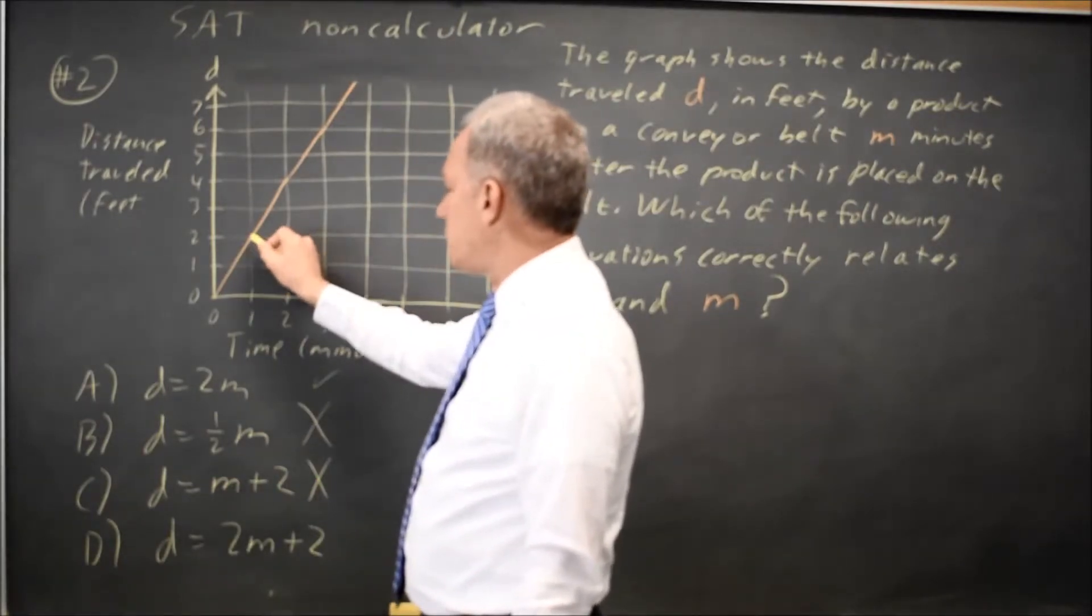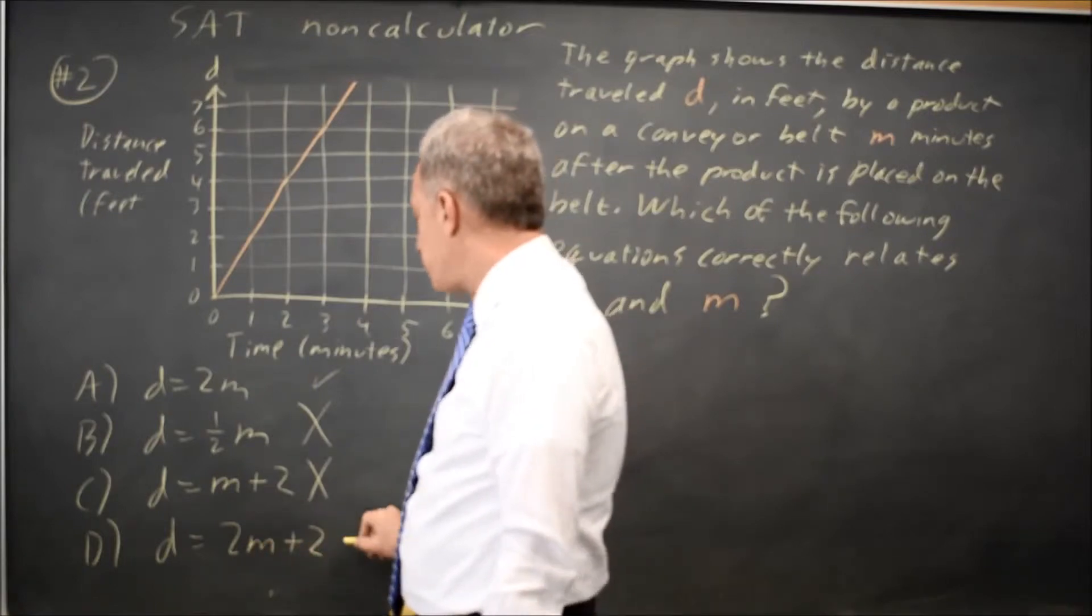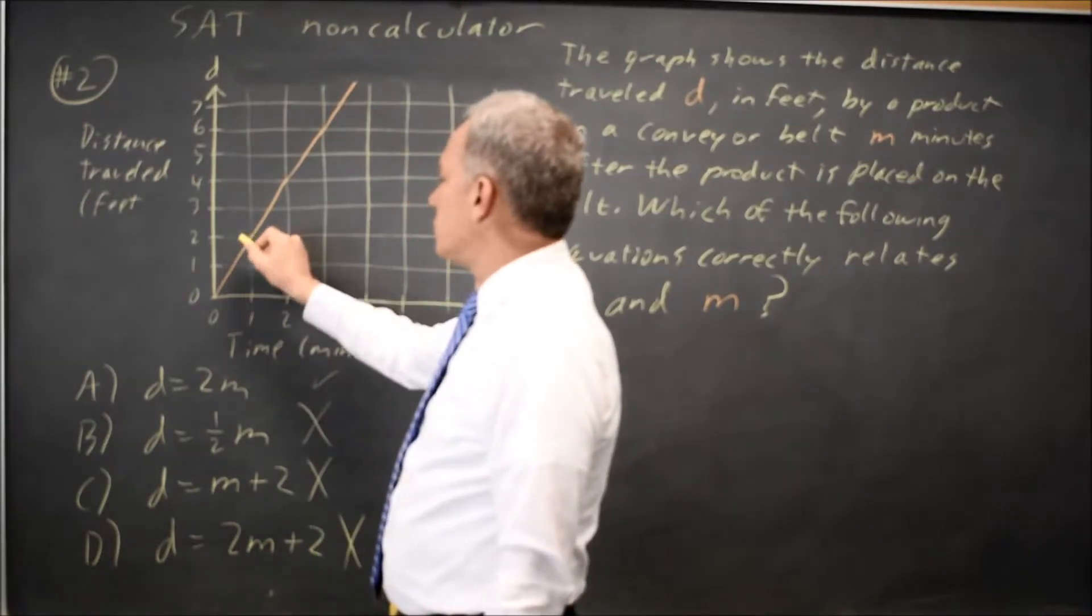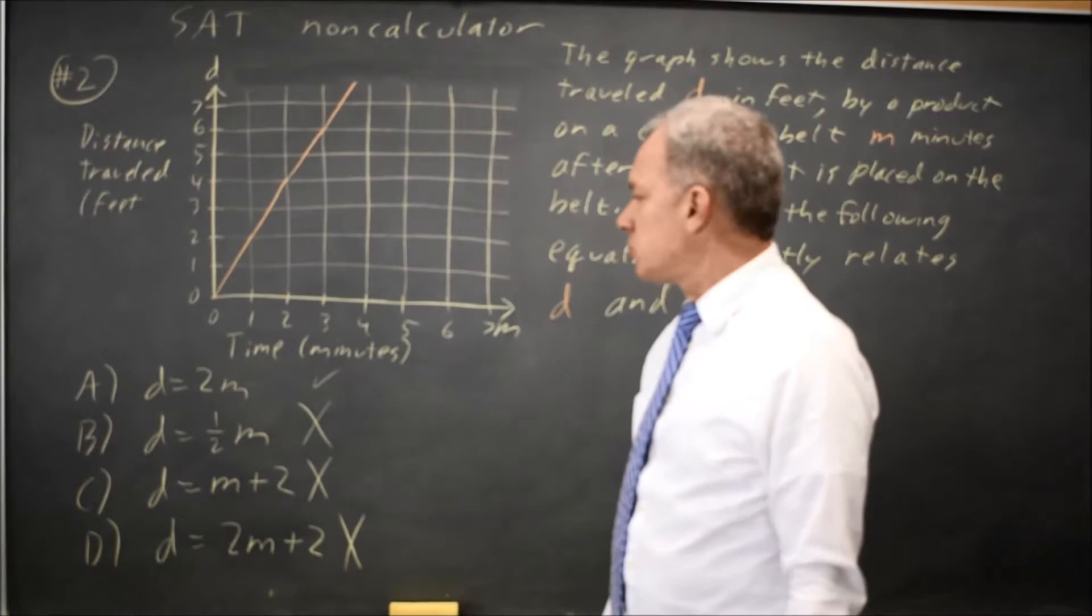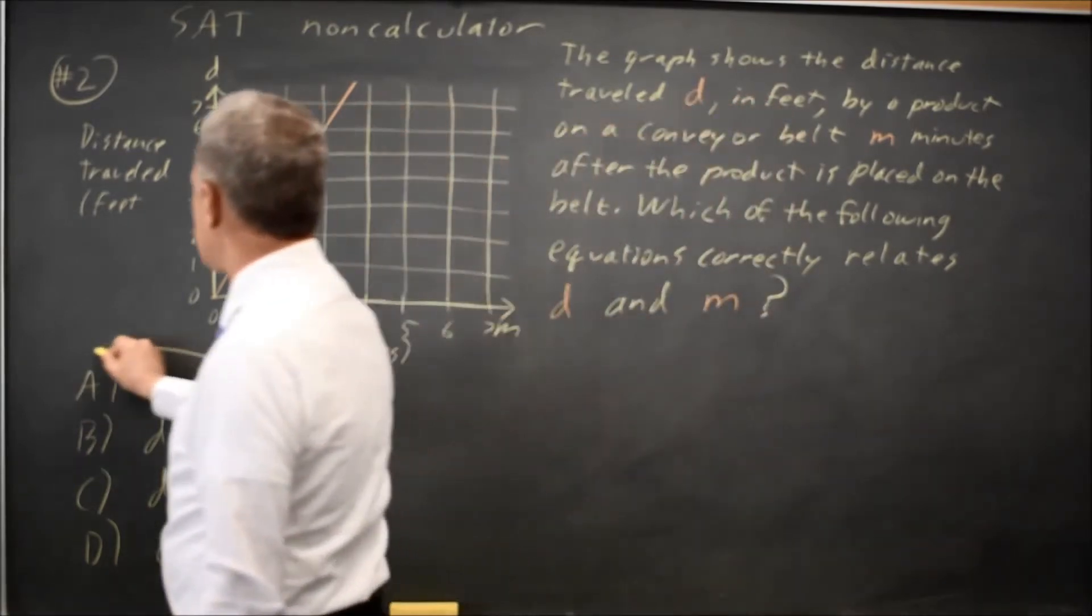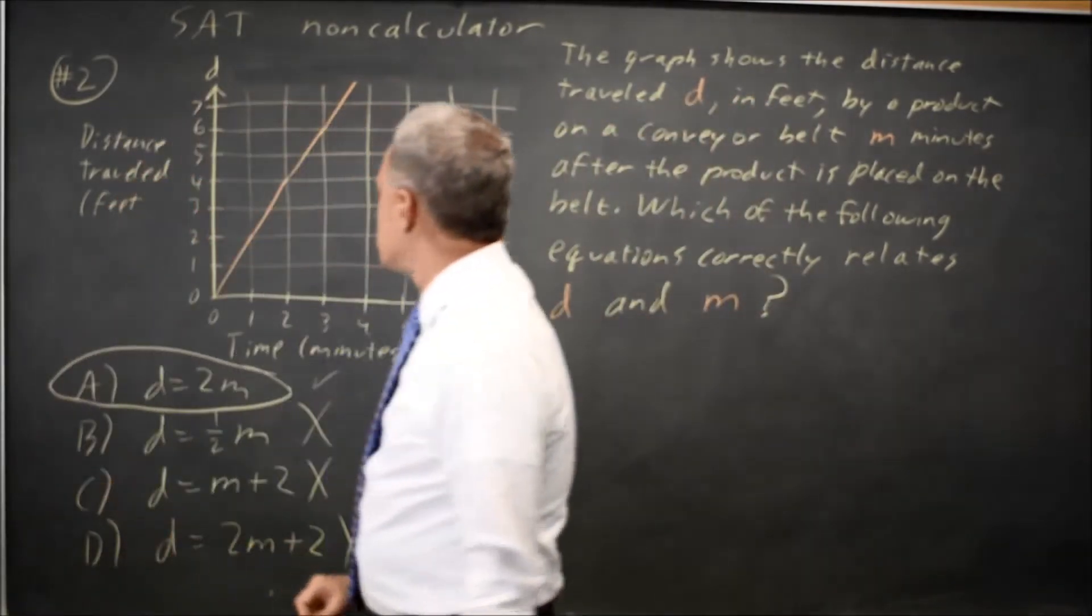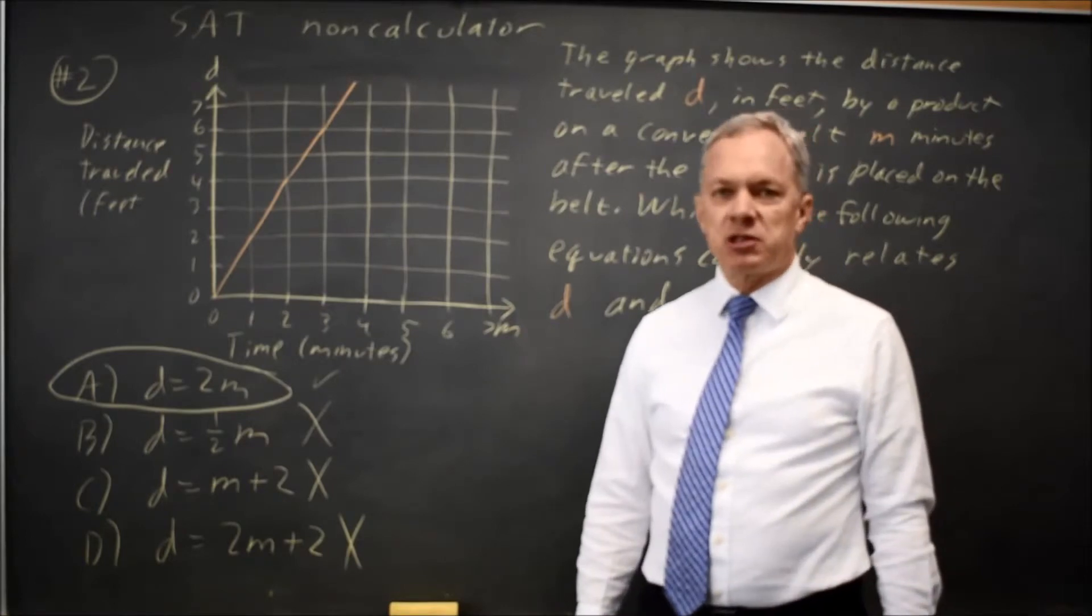If M equals 1, choice D gives me twice 1 is 2 plus 2 is 4, but D is not 4, D is 2 and M is 1. So choice A is the only answer that works for M equals 1, so A must be the right answer.